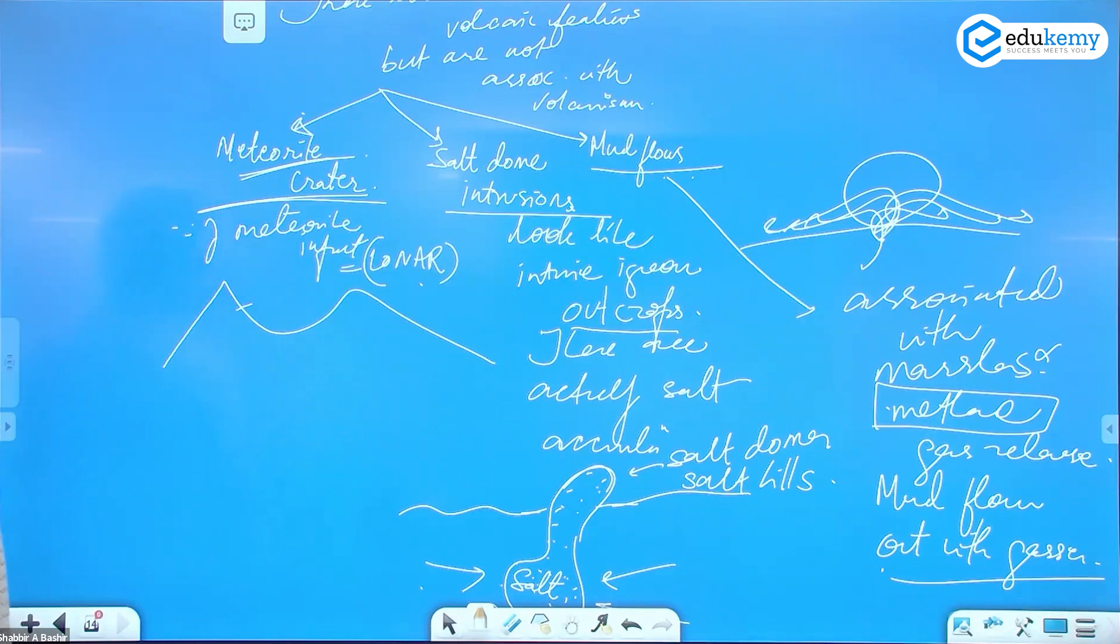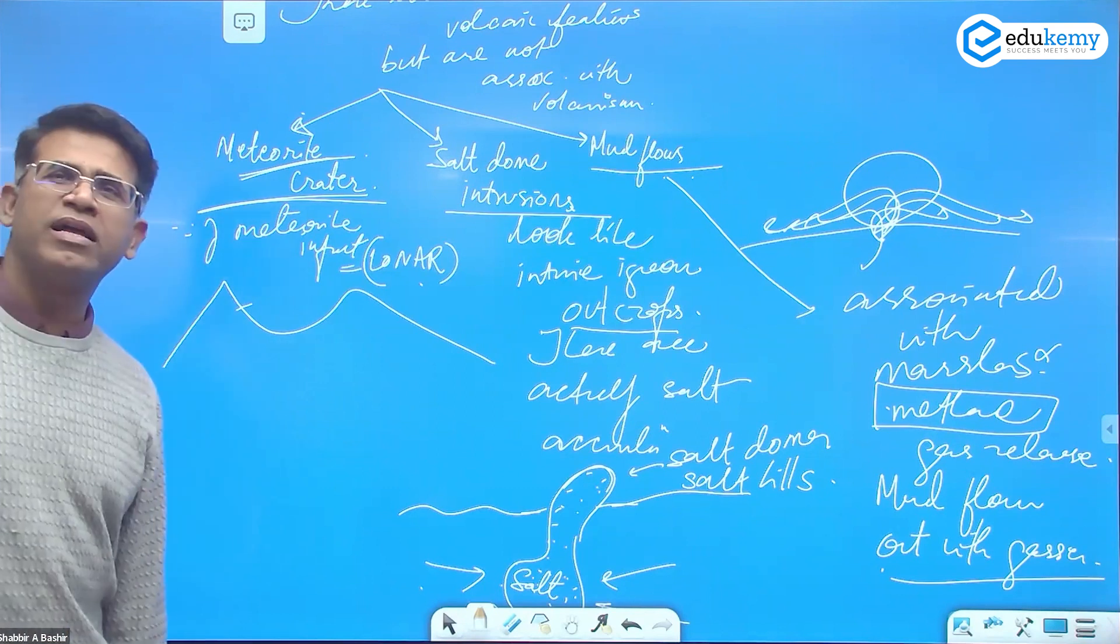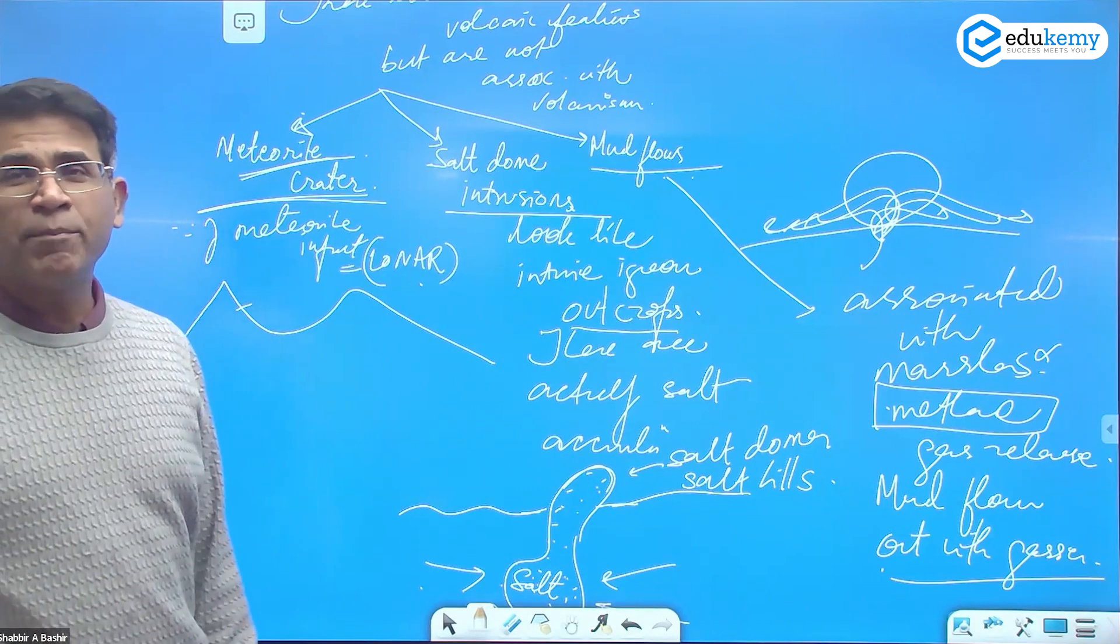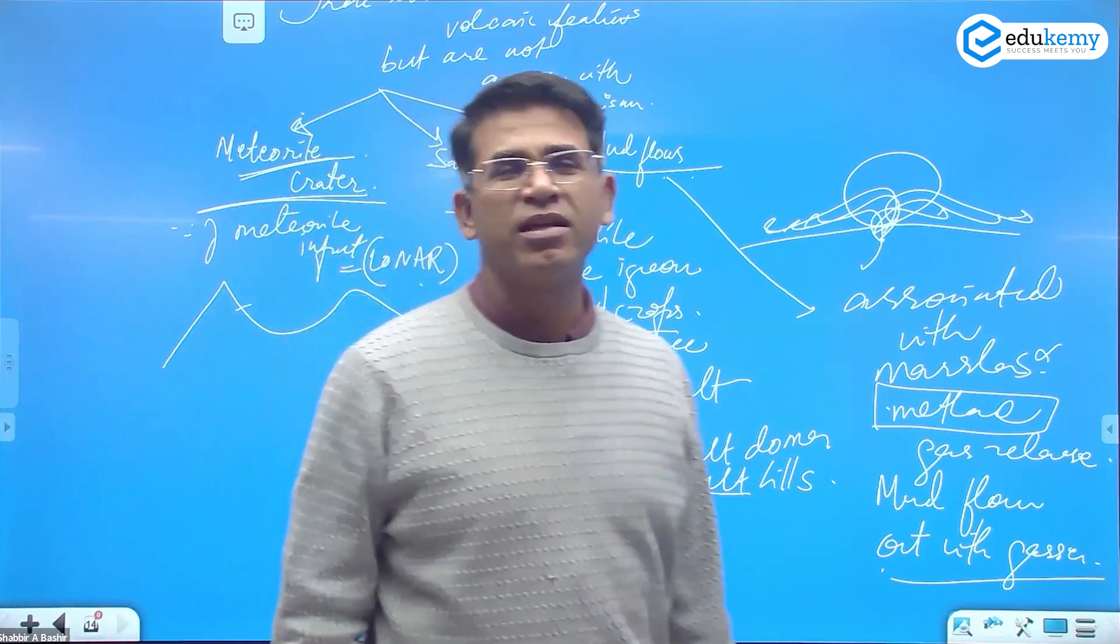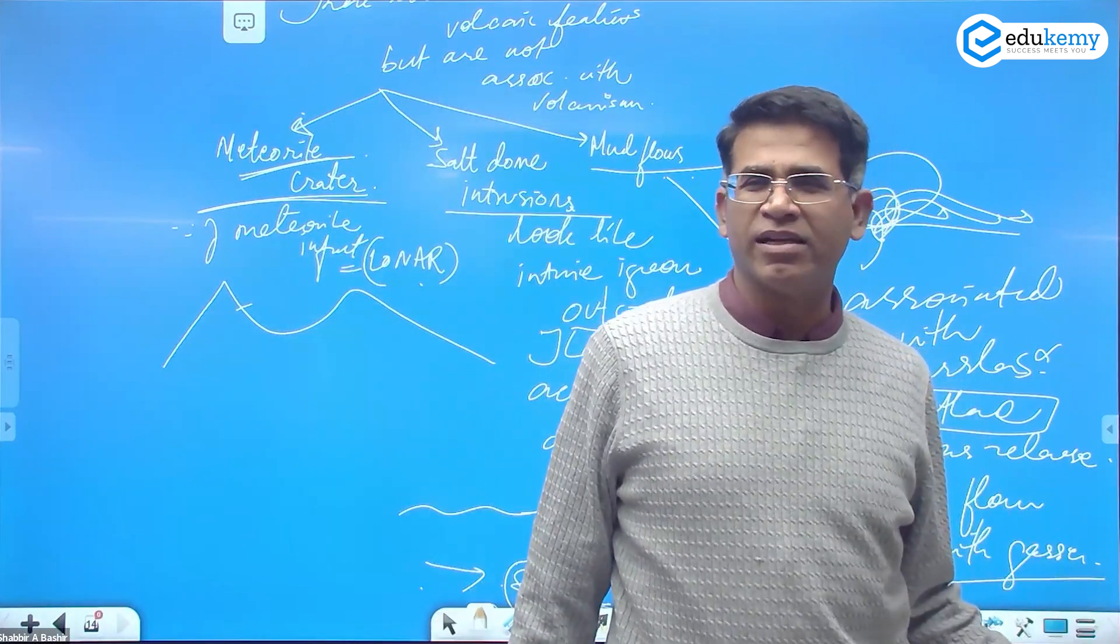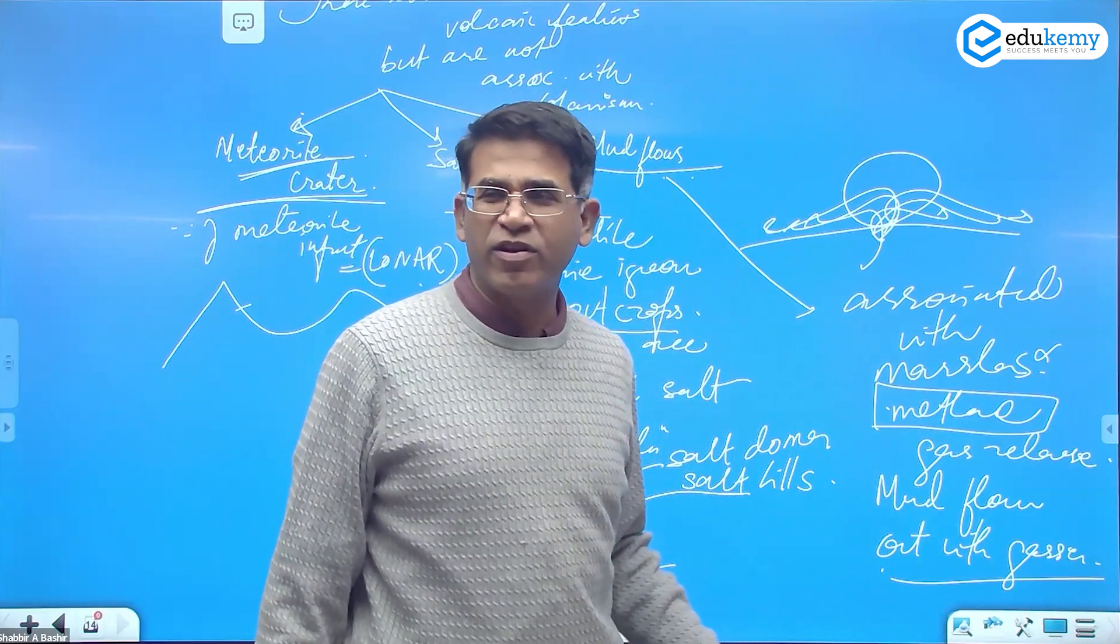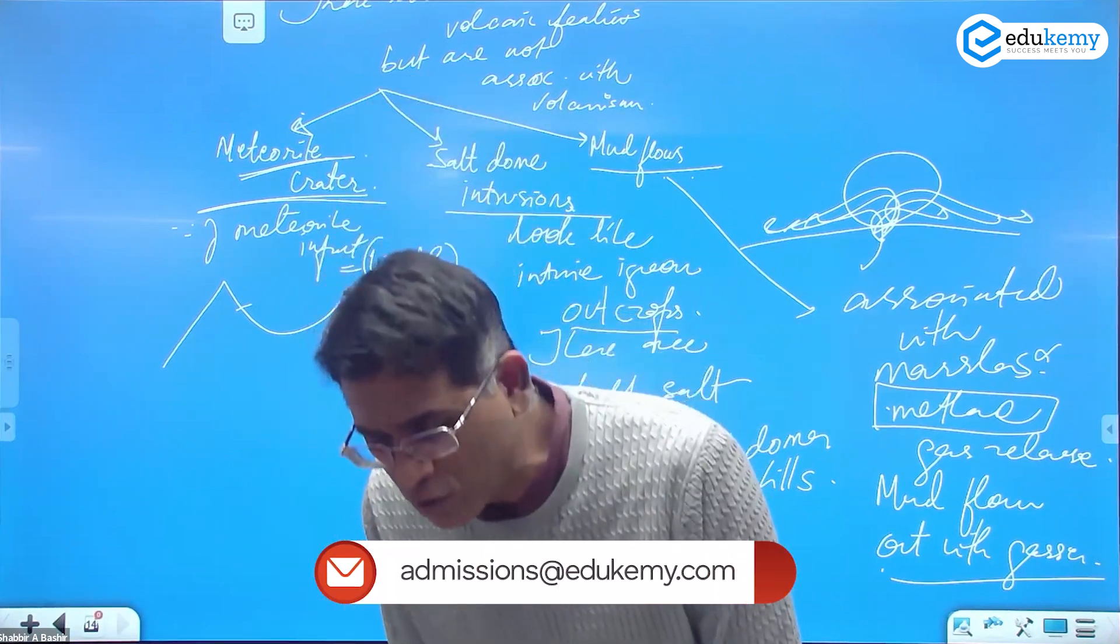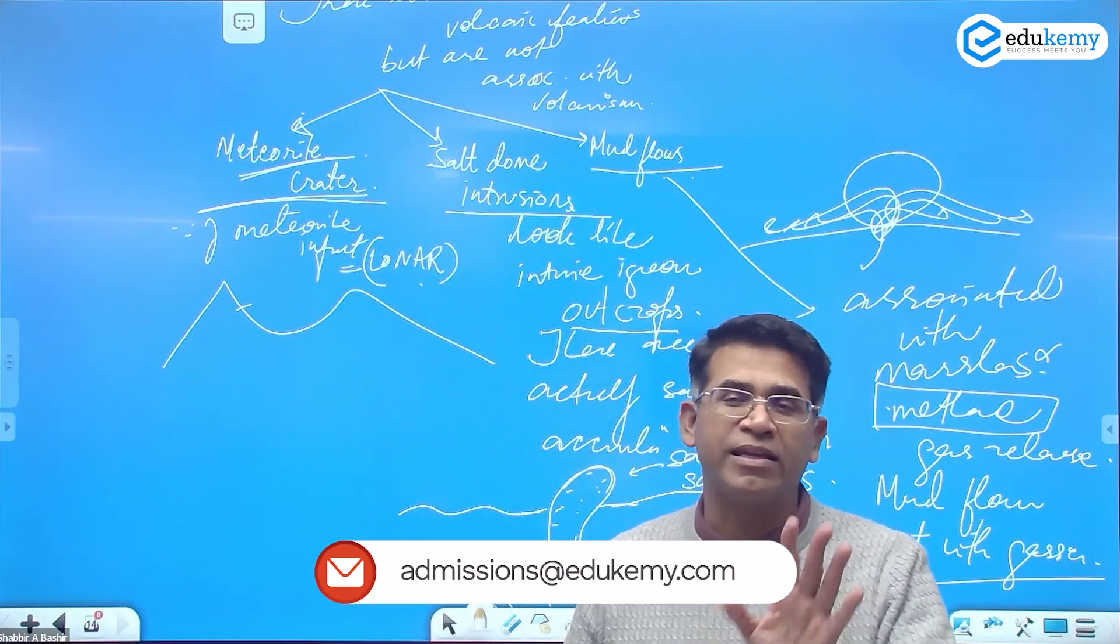These three features are called pseudo-volcanic features. Mud flows associated with marshes and methane gas, and methane gas release, the mud flows out with the gases. So this was a question asked one of the years, this is one of those questions.